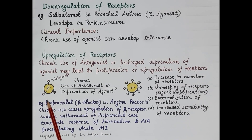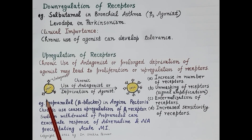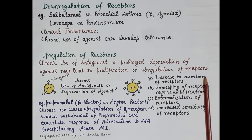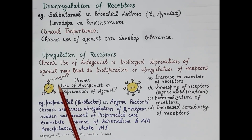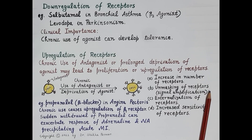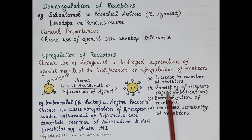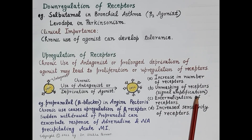Looking at this figure: an antagonist binds to receptors but does not activate them, so no response is produced. Chronic use of antagonist makes the target cells inactive for a long period. This leads to several effects: first, an increase in the number of receptors — up regulation. Second, long-term use causes unmasking of receptors; some receptors are inactivated by masking proteins, and removal of masking proteins increases sensitivity and activity, leading to signal amplification and increased response.